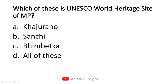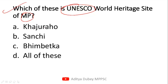The next question asks: which of the following is a UNESCO World Heritage Site in Madhya Pradesh? Four options are given. Khajuraho, Sanchi, and Bhimbetka — all three are World Heritage Sites of Madhya Pradesh declared by UNESCO. MP has a total of 3 UNESCO World Heritage Sites: Khajuraho, Sanchi, and Bhimbetka. Hence the answer is option D — All of these.